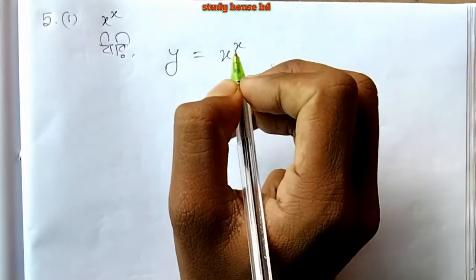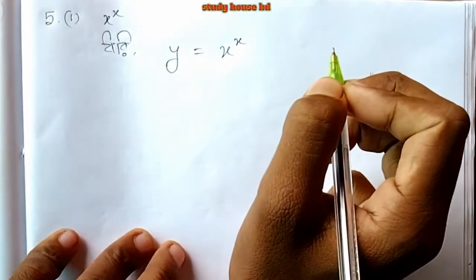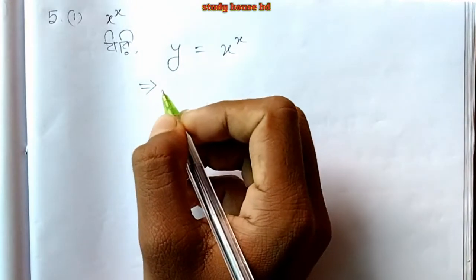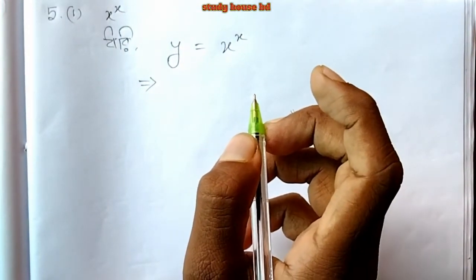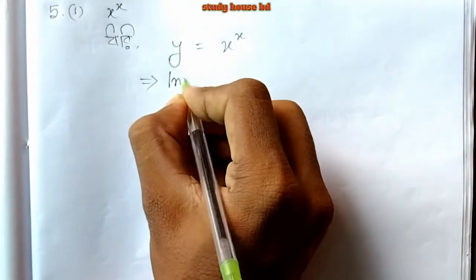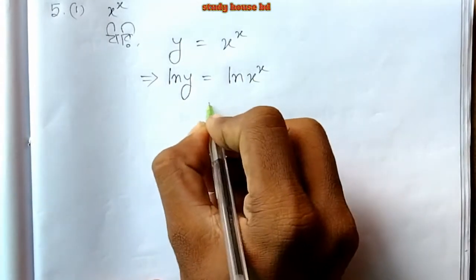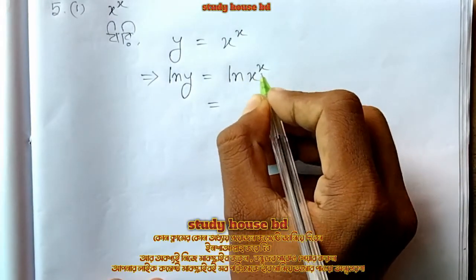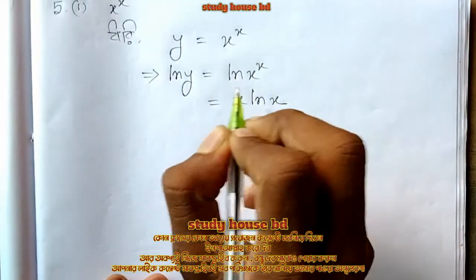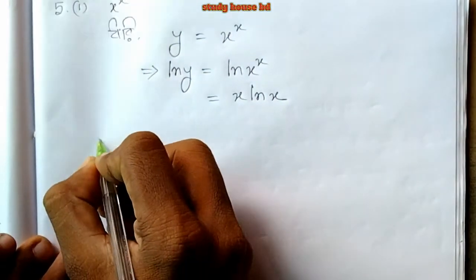We have y equals x to the power x. Taking the natural log of both sides: ln y equals ln of x to the power x, which gives us ln y equals x ln x. So I know that ln of x to the power x equals x ln x.